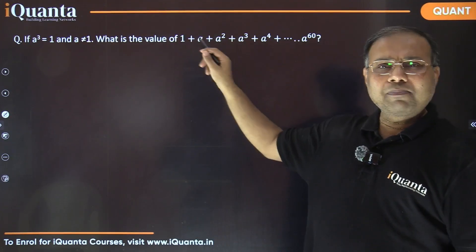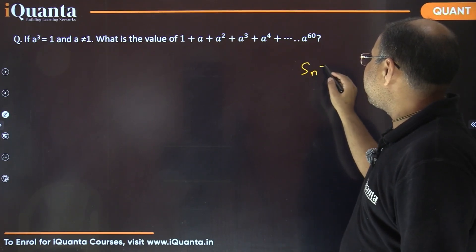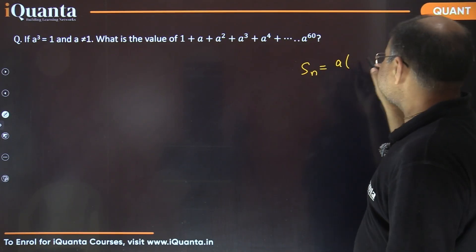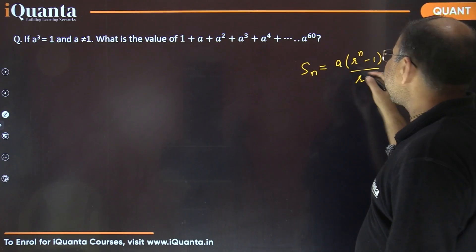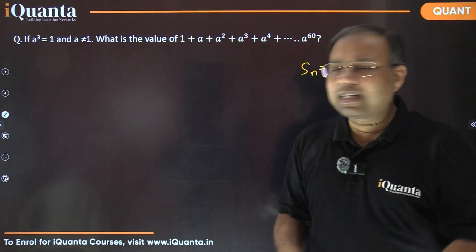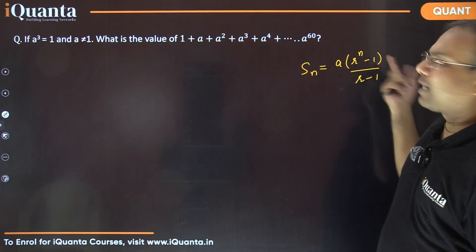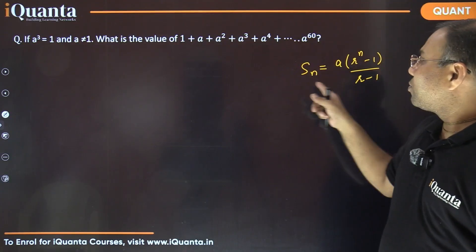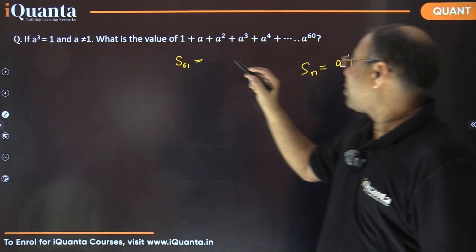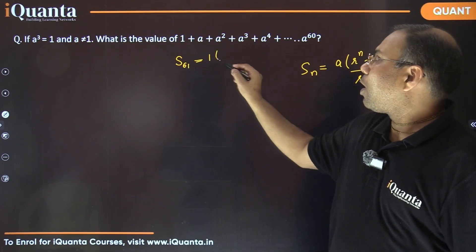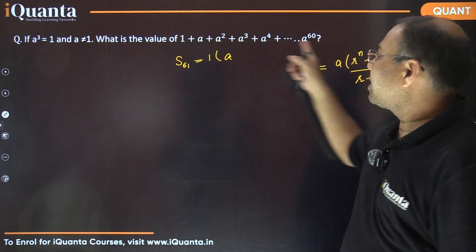The sum of n terms of a GP is given by: S = a₁ · (rⁿ − 1) / (r − 1), where r is the common ratio, n is the number of terms, and a₁ is the first term. Applying this here: sum of 61 terms, first term is 1, common ratio r is a, and number of terms is 61.